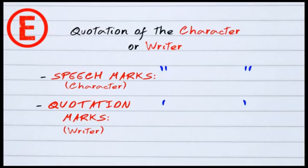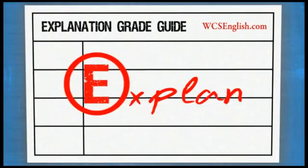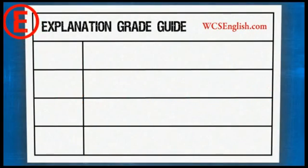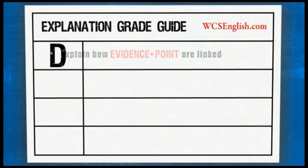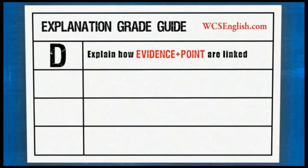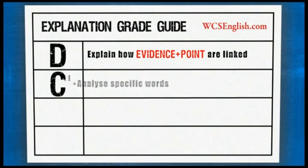Now that's your P and your E covered — they're very simple. The explanation is where you fully develop things. If you're going for a D, your explanation will simply explain how the evidence and point are linked. If you're looking for a C, you'll do that and also analyse specific words — this could be in the form of literary techniques used, punctuation used, or specific words.